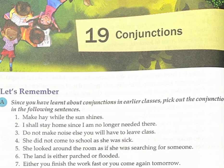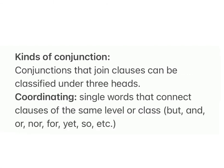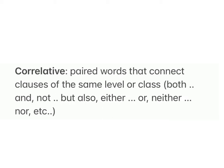Lesson 19: Conjunctions. A conjunction is a word or a group of words that joins together words, phrases, and clauses. Conjunctions that join clauses can be classified under three heads. Coordinating conjunctions are single words that connect clauses of the same level or class: but, and, or, nor, for, yet, so, etc.